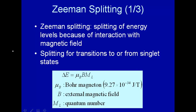Let's consider quantitatively the splitting of degenerate energy levels caused by a magnetic field, the Zeeman splitting. Here's the Zeeman splitting equation. The energy level splitting for splitting to and from singlet states is μ_b, the Bohr magneton, which has a value of 9.27 times 10 to the minus 24th joule per tesla. B is the external magnetic field, and m_l is the quantum number used to describe the various energy levels.